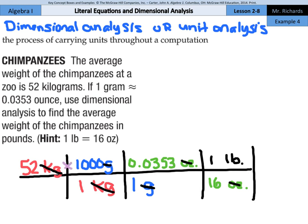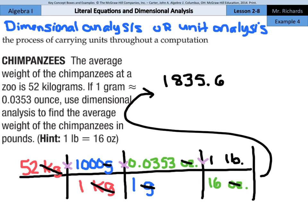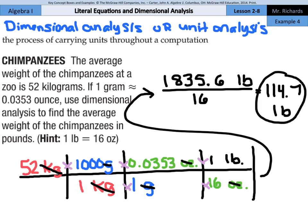I'm going to multiply these numbers on top. 52 times 1,000 times 0.0353 is 1,835.6 and our units are pounds over 1 times 1 times 16 is 16. So I still need to divide by 16 before getting my final answer, my final answer of 114.7 pounds. And that's my solution, 114.7 pounds.